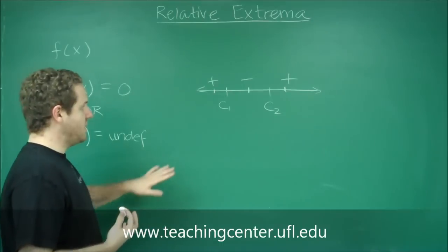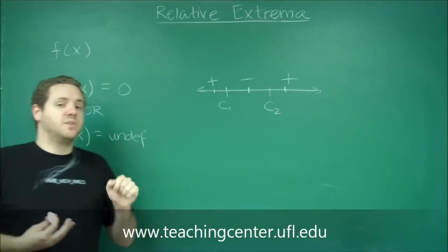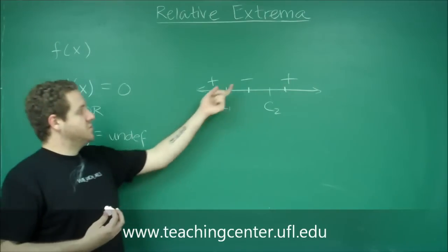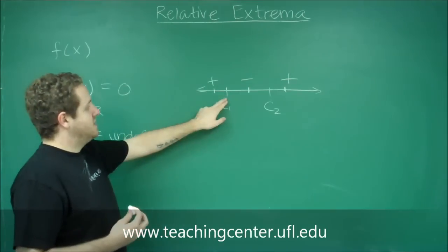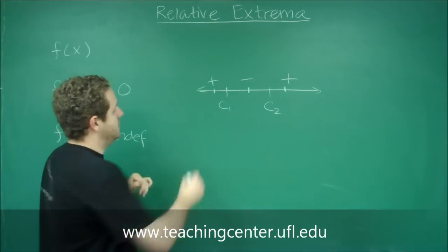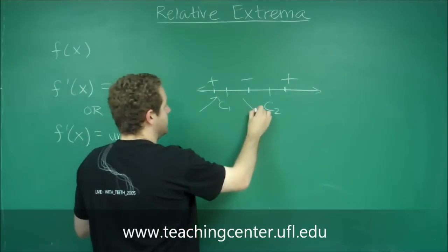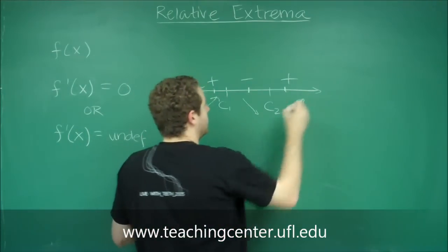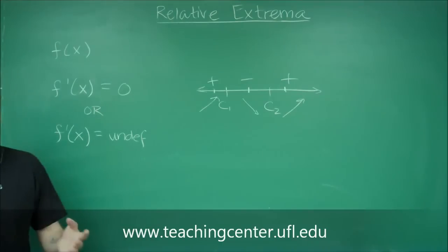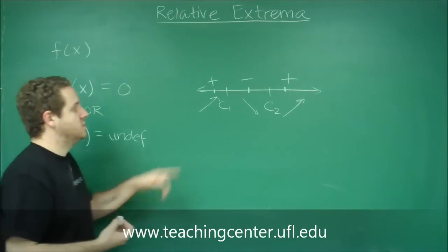So remember that if the derivative is positive that means our function is increasing, and if the derivative is negative that means our function is decreasing. So right here at c1 our function switches from increasing to decreasing, and here at c2 our function switches from decreasing to increasing. Remember we always go from left to right.